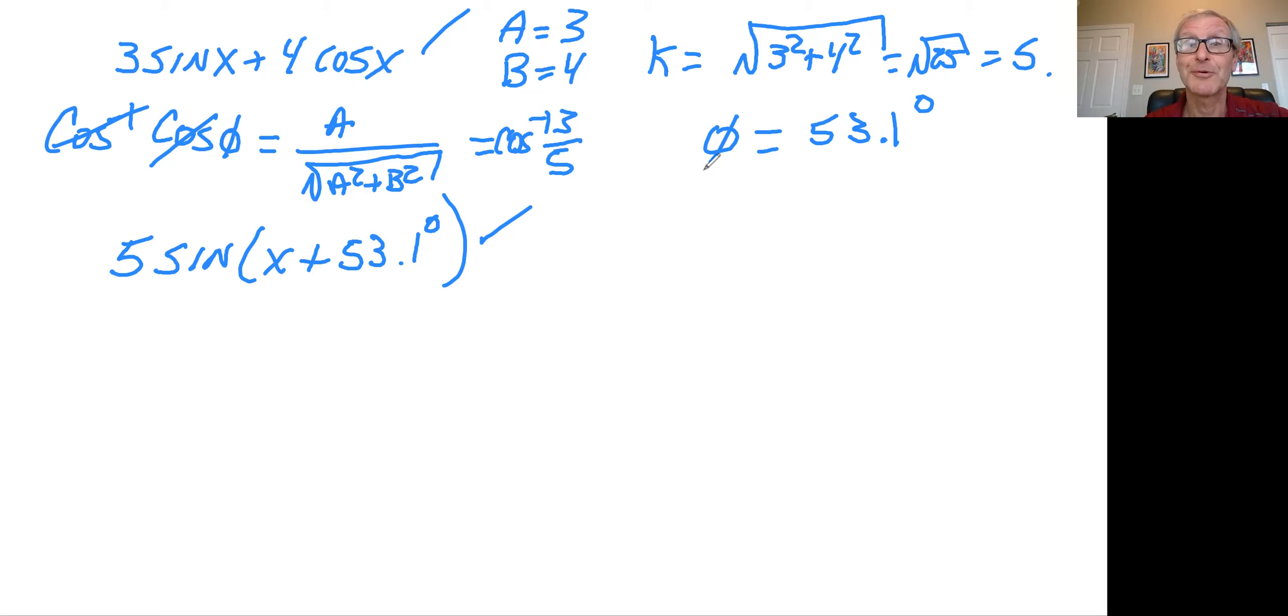Let me refresh your memory. Period is two pi. Phase shift is minus 53.1 degrees. And what's our amplitude? That would be five.